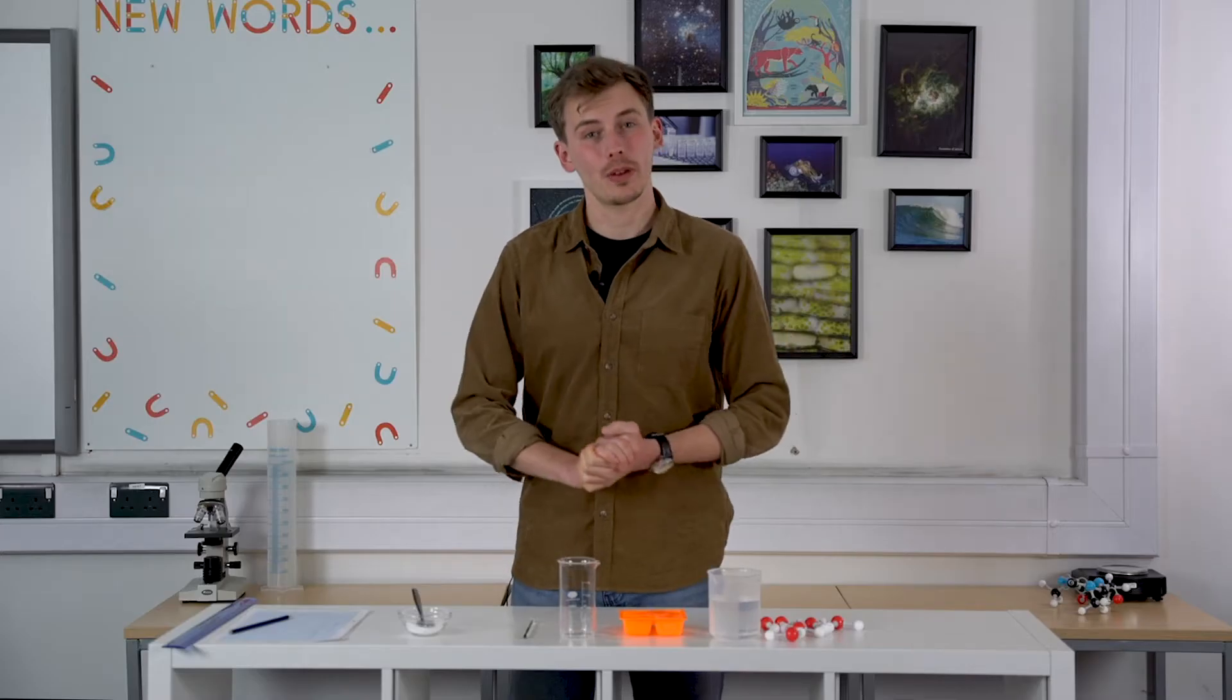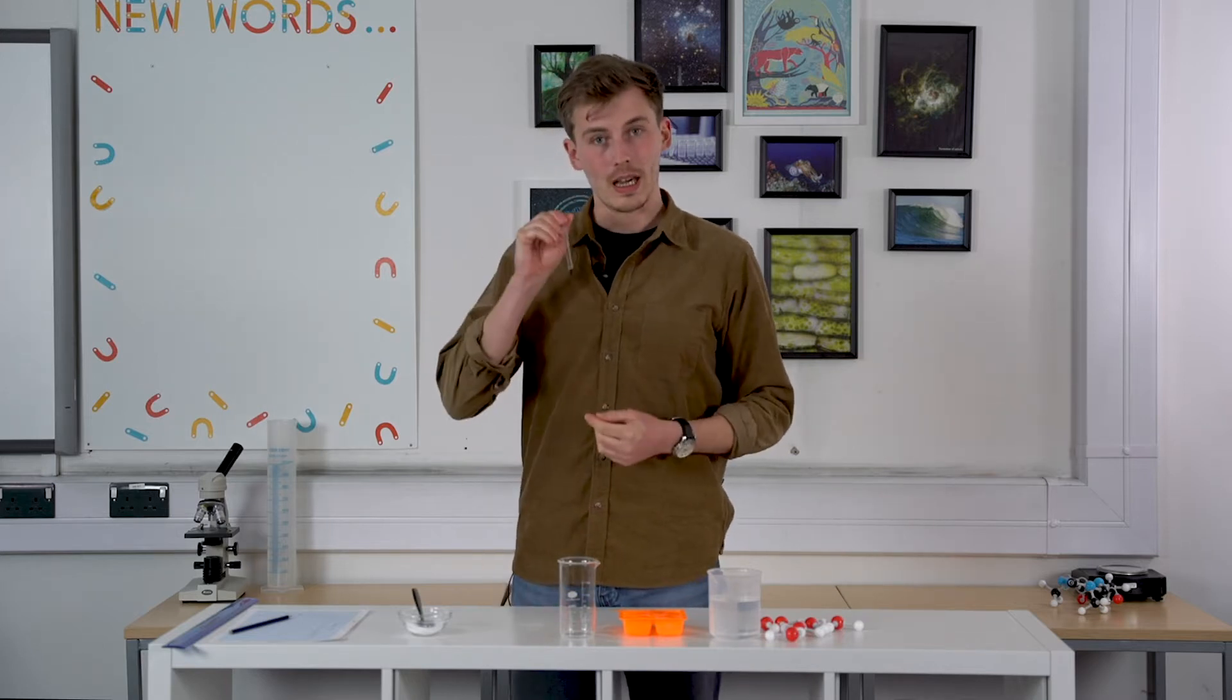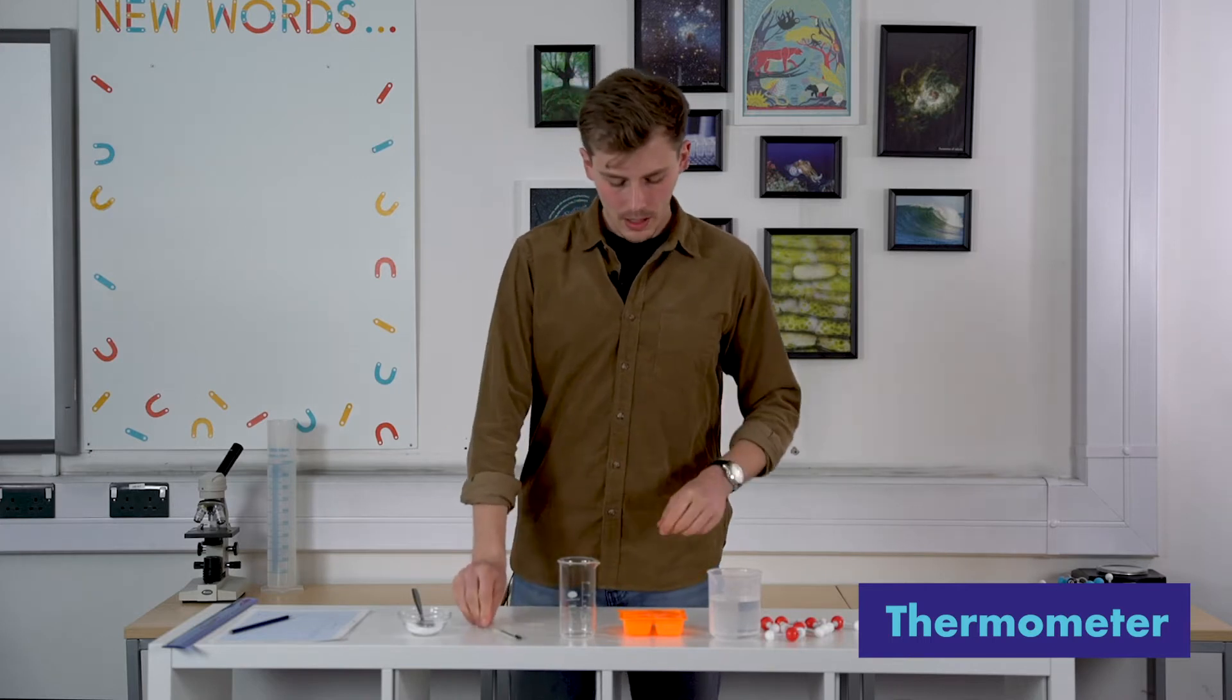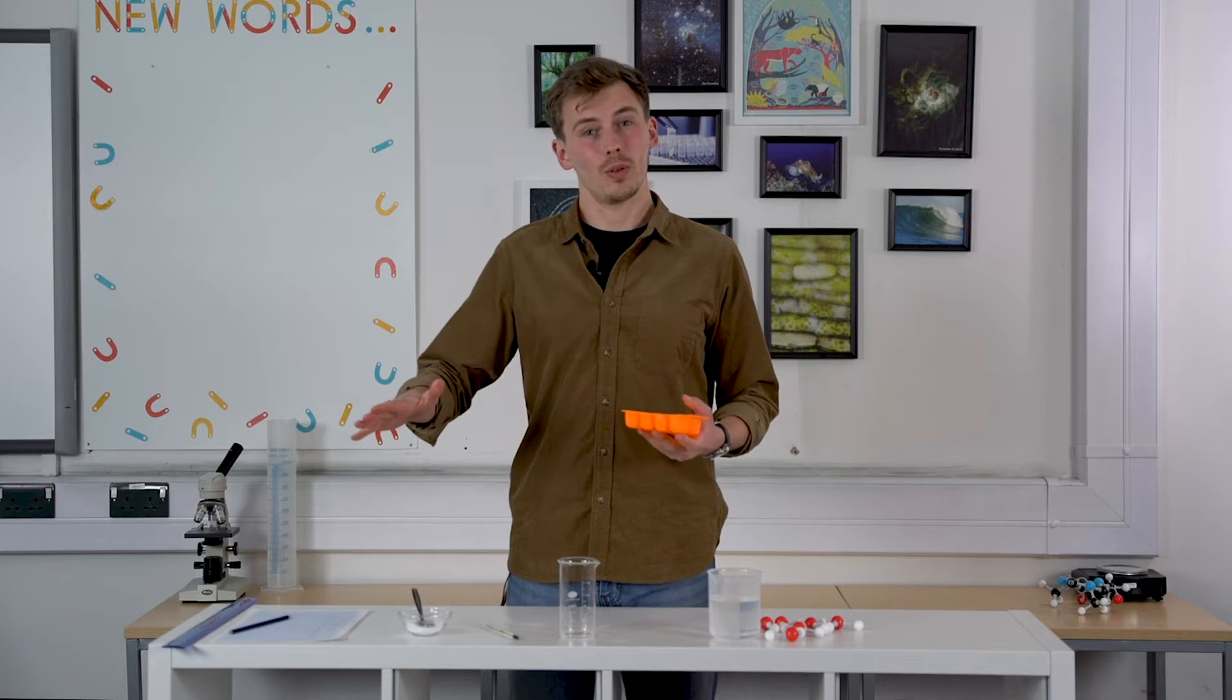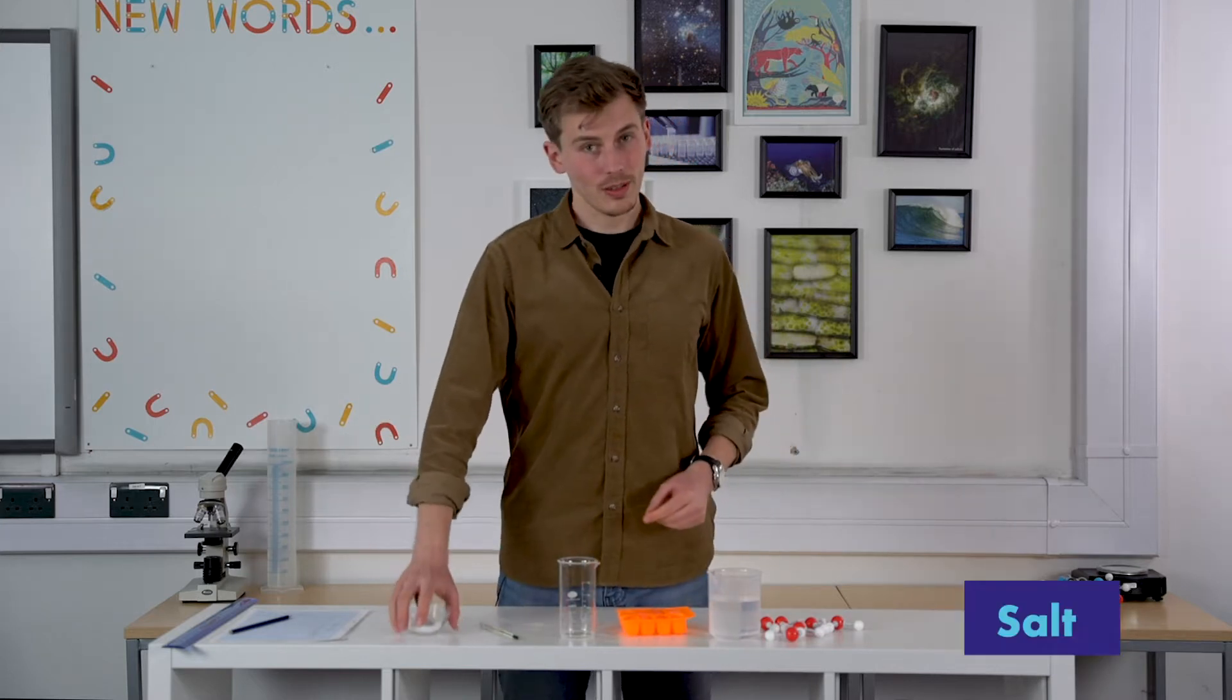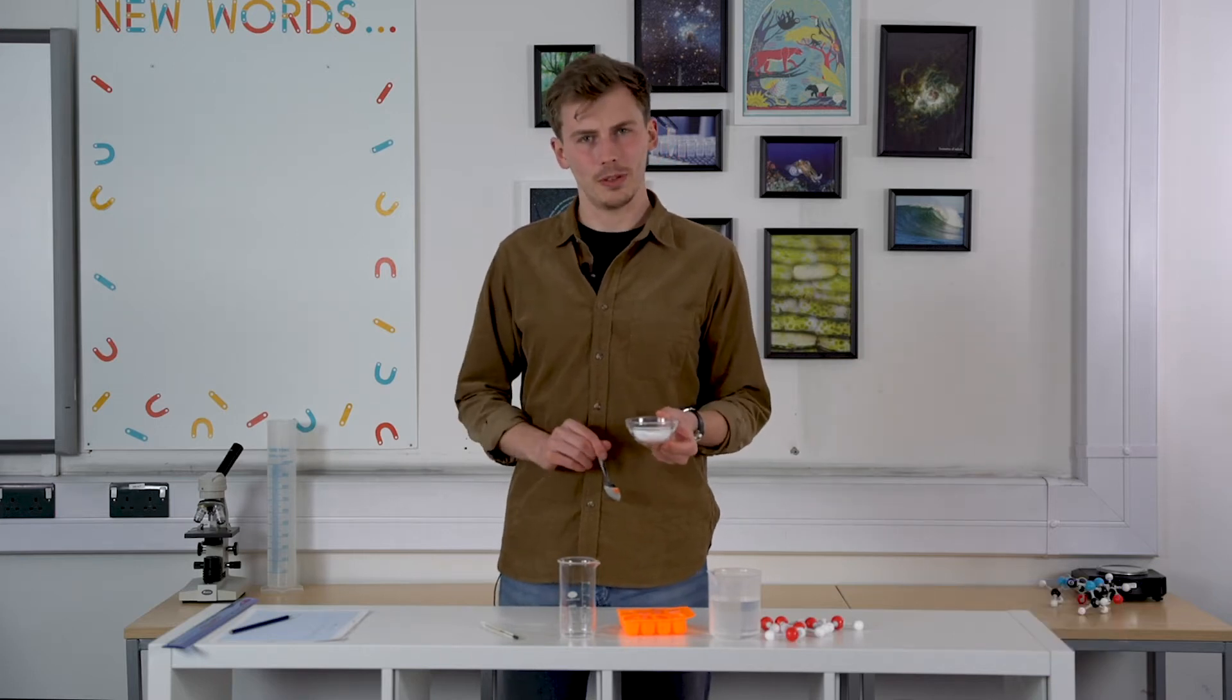So for this experiment you are going to need a few things that we've provided in your delivery box. First of all, you will need a glass thermometer like this. It'll be in a plastic box. You're going to need some ice and you will need to set that in your ice cube tray that we've given you. So if you're doing this experiment in the morning, set off your water to freeze overnight. You're also going to need some salt. I've got a bit more than I need here, but you'll probably need four or five teaspoons worth of salt.